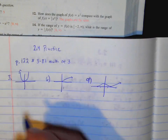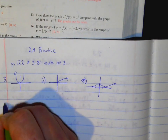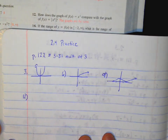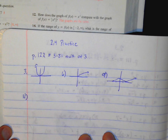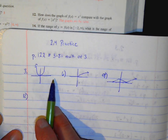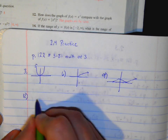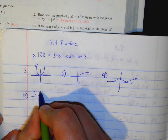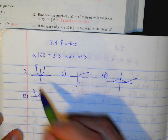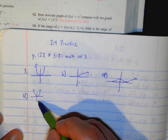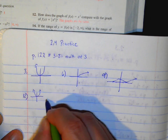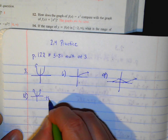Number 12. How does a graph of f of x compare with the graph of absolute value of f of x? If you think about it, f of x equals x squared. The absolute value of that would just turn anything negative to be positive, but there isn't anything negative, so they will stay the same.